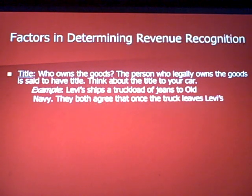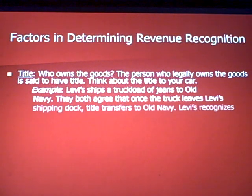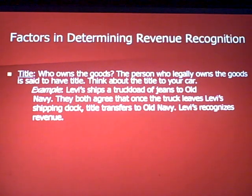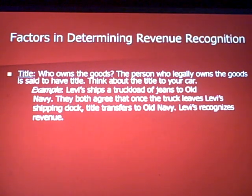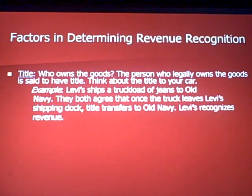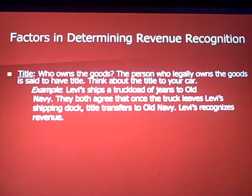Some other factors to consider when recording revenue: who actually owns the goods? This applies to our Levi's example. The person who legally owns the goods is said to have title — think about the title to your car. When you paid off your car, the bank handed you the title, making you the legal owner with no liens.